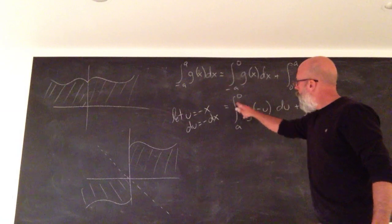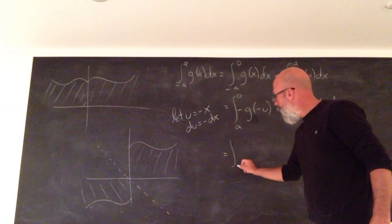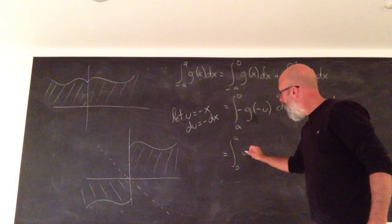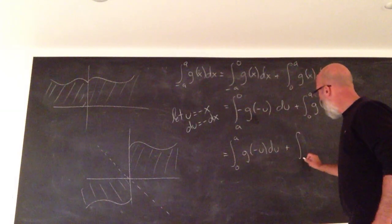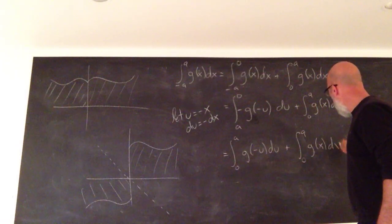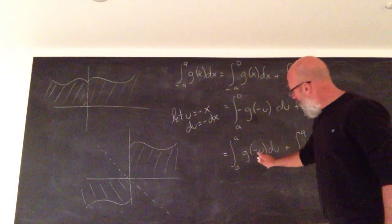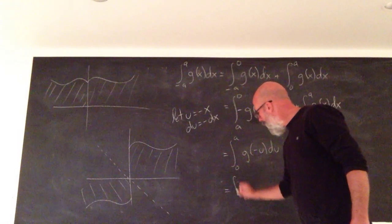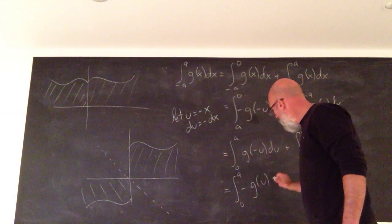Now, you've got a negative here, so you can switch the order of integration. G is odd, so G of negative U is negative G of U.